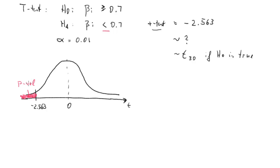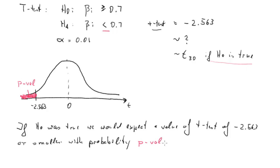The p-value will be larger than 0 and smaller than 1. Graphically, it is the probability of getting a t-statistic smaller or equal to negative 2.563, given that distribution is true. It's important to understand this in the context of the null hypothesis: this distribution is valid if H0 is true. So, if H0 was true, we would expect a t-statistic of negative 2.563 or smaller with a probability equal to the p-value.